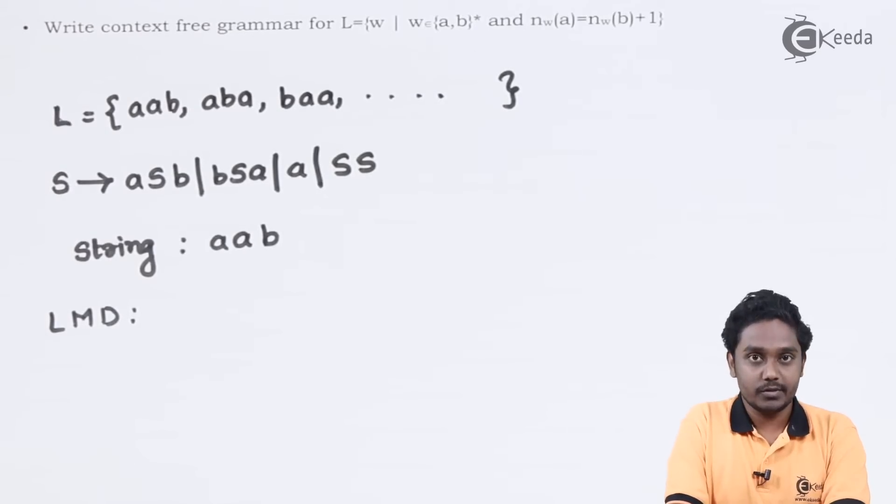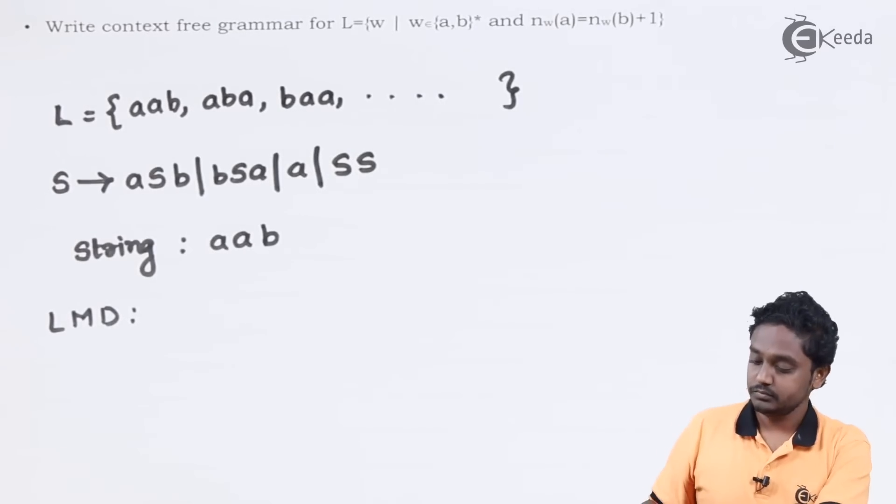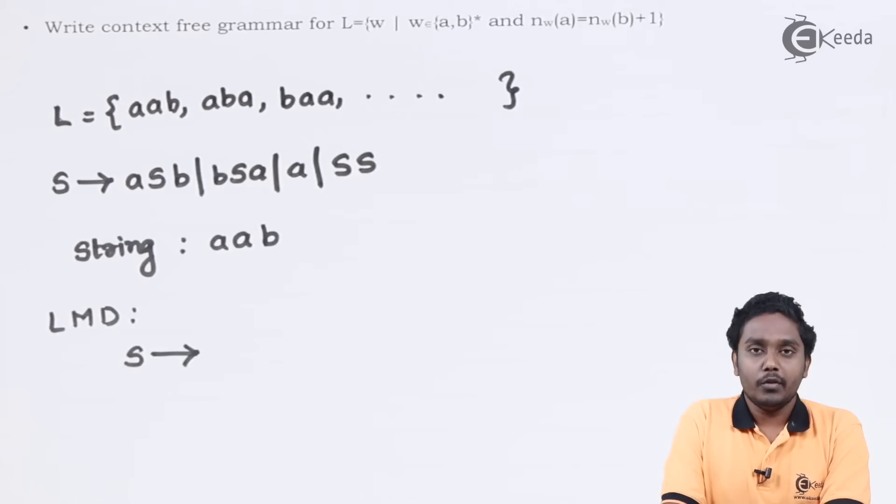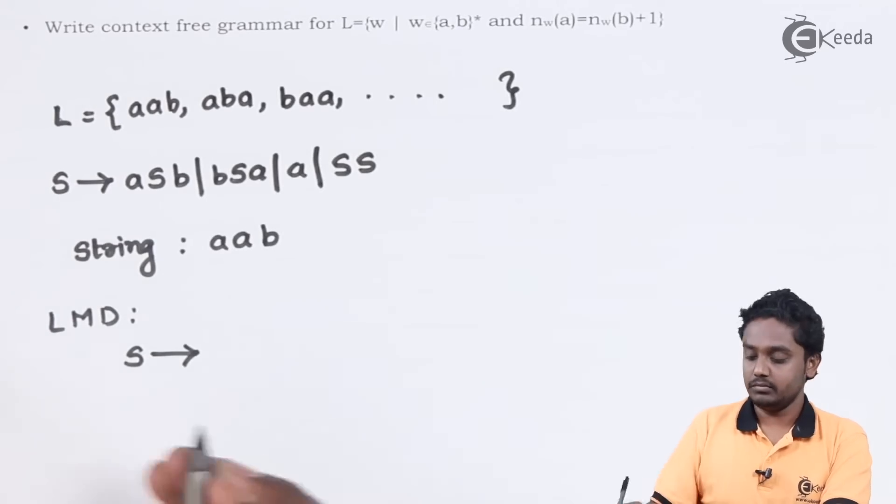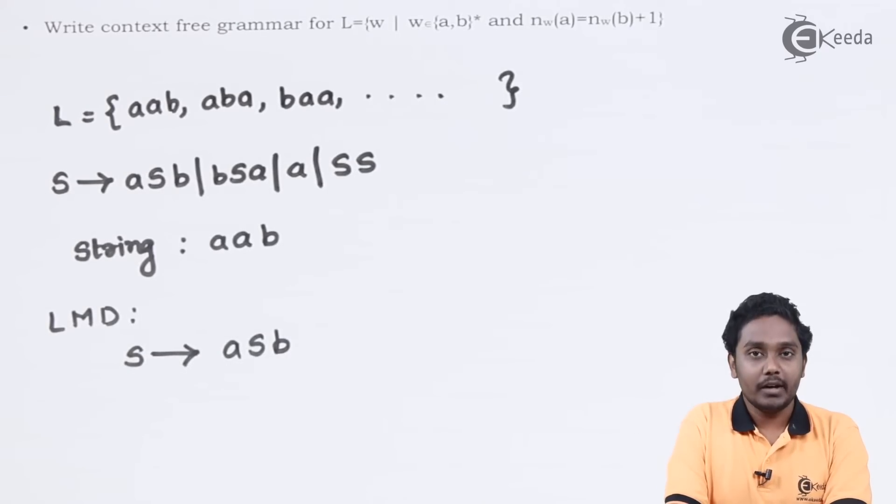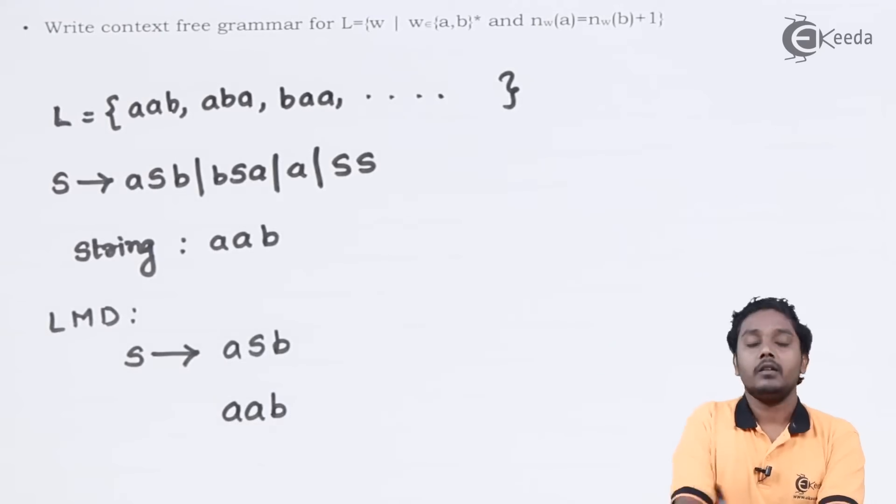Let us do the leftmost derivation first. Here we are first using the first production to construct one pair of A and B. Now we need one more extra A, for that we can use the production S produces A. You can see that we have constructed the required string.